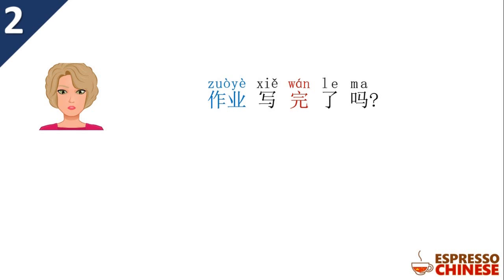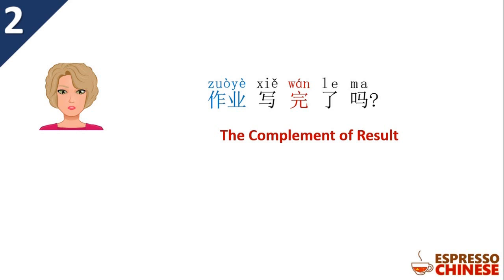作业写完了吗? 作业 means homework. 写完了吗 — this 完 is a complement of result. You put 完 after a verb to show you have finished doing something. In this case, it means 'have you finished doing your homework?' Notice here the mother puts 作业 at the beginning, which as we mentioned is a topic-comment structure. The topic is homework, and as for the homework, then the comment follows: have you finished writing it?